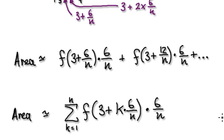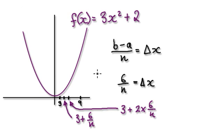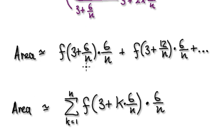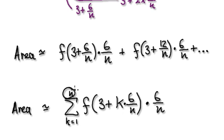And then dot dot dot, so it continues. And then we can summarize it to this. So the area between 3 and 9 — this whole area here — is approximately this thing here. Later on we're going to make n head towards infinity. But I will continue in the next video.